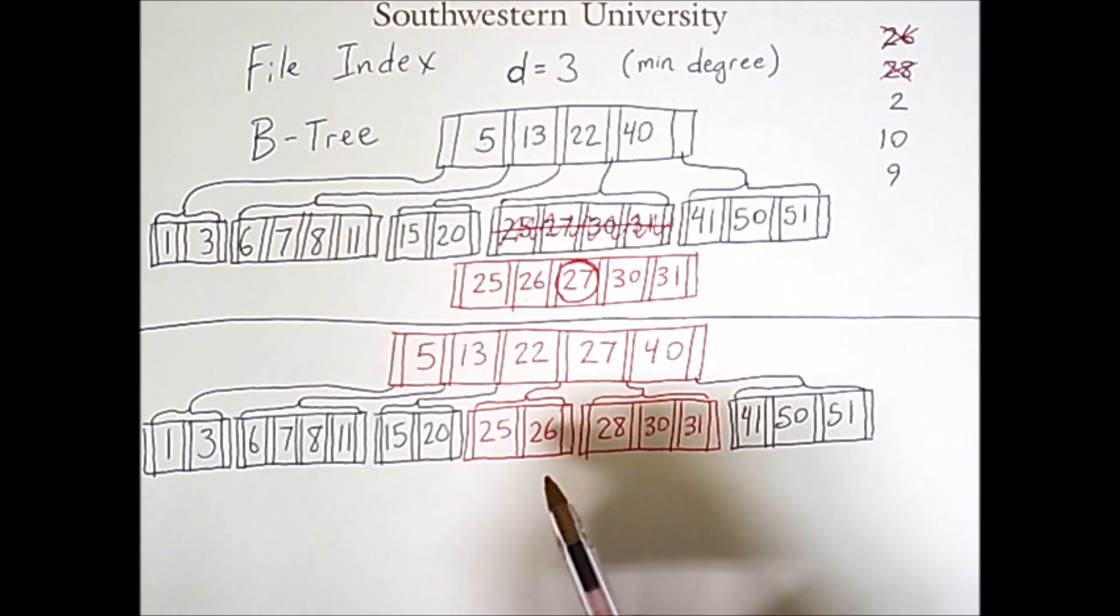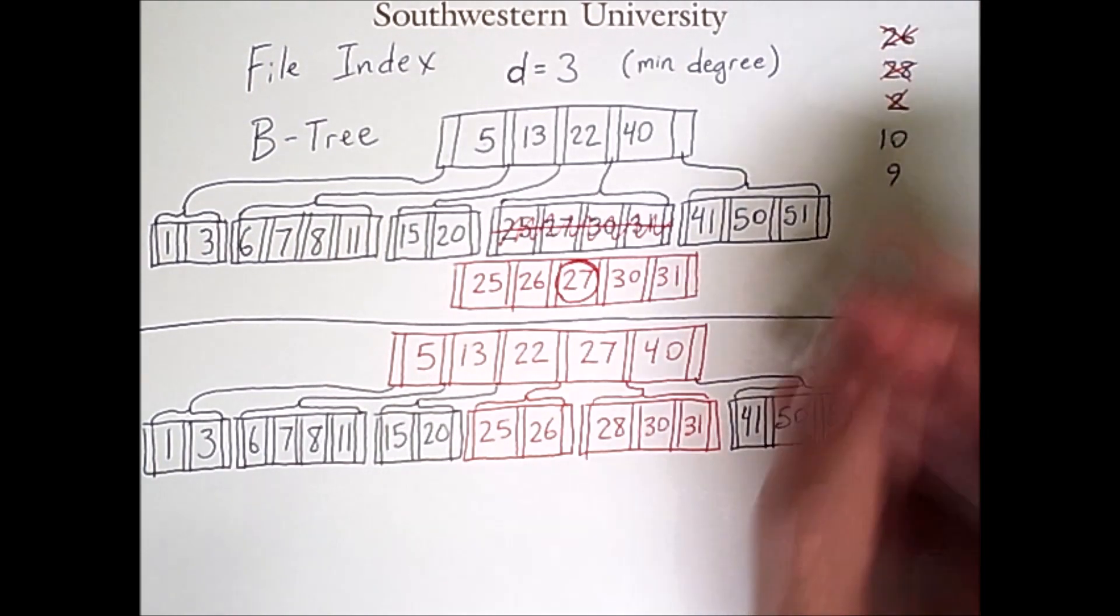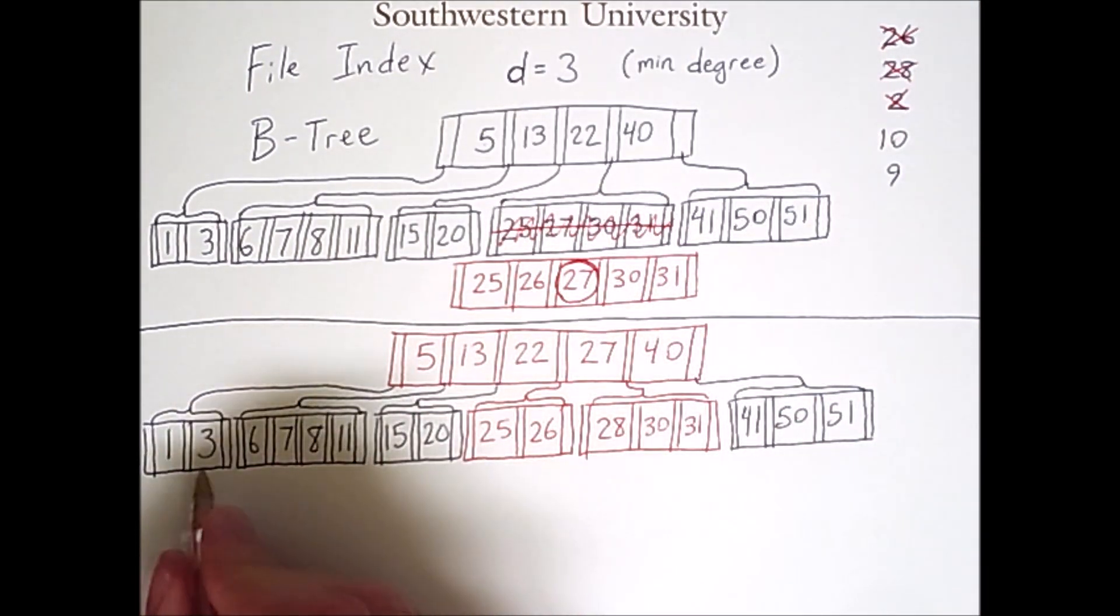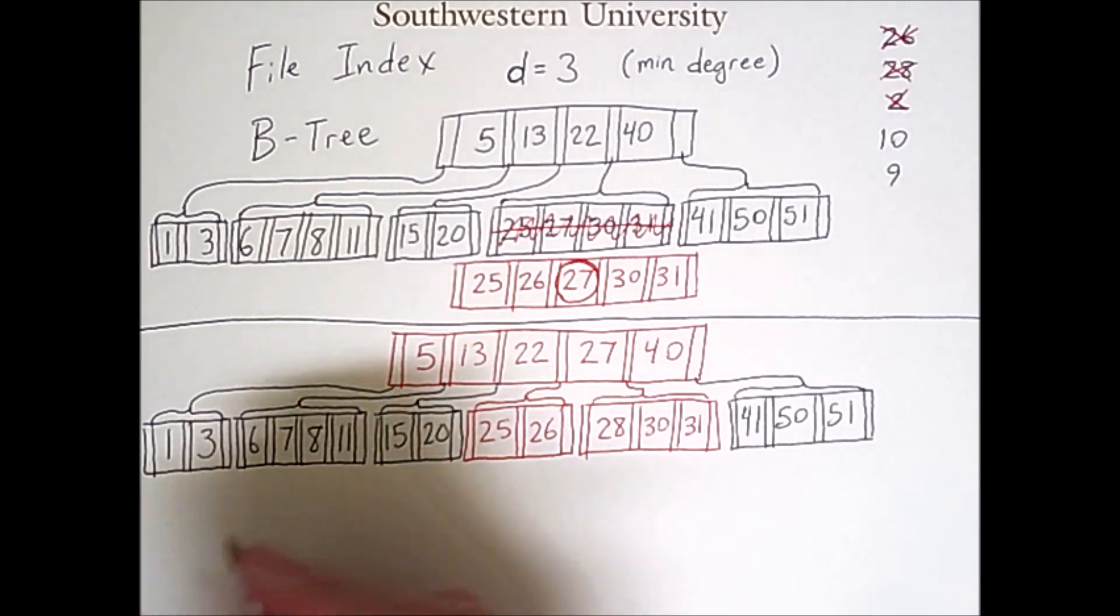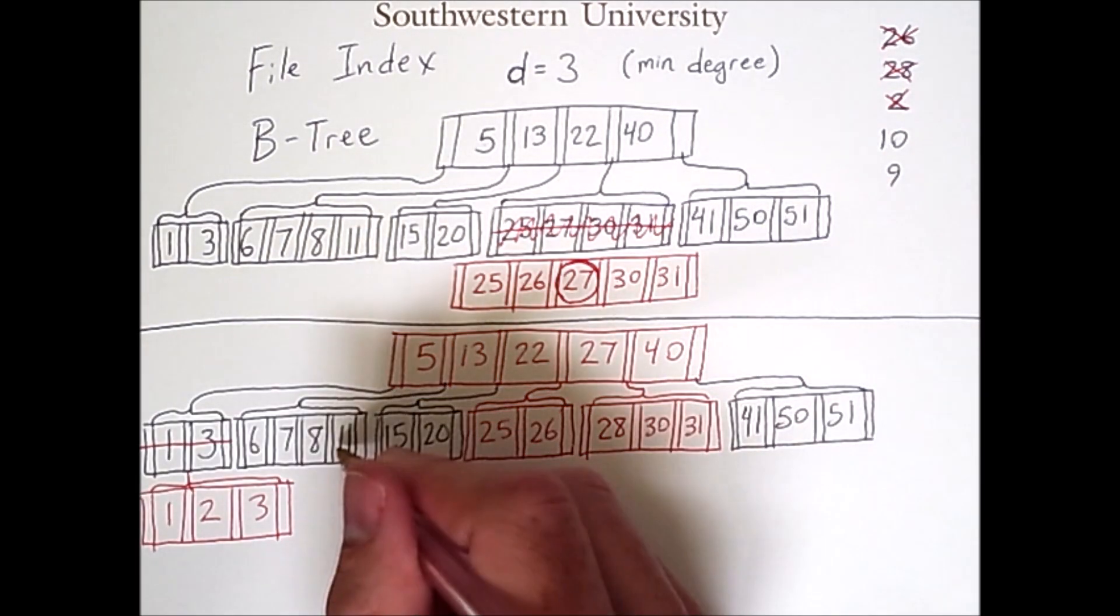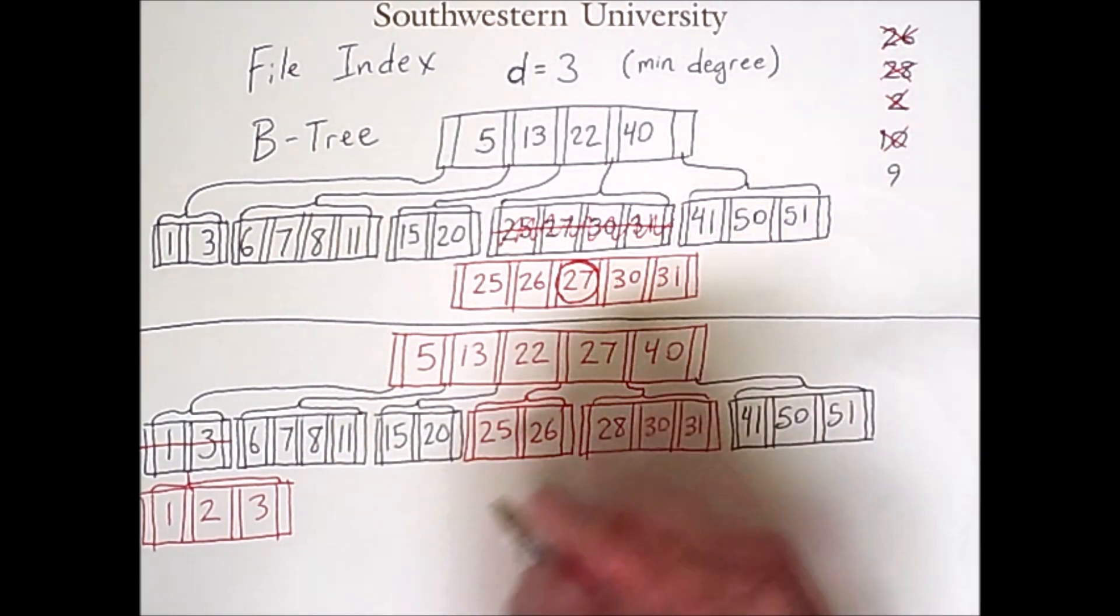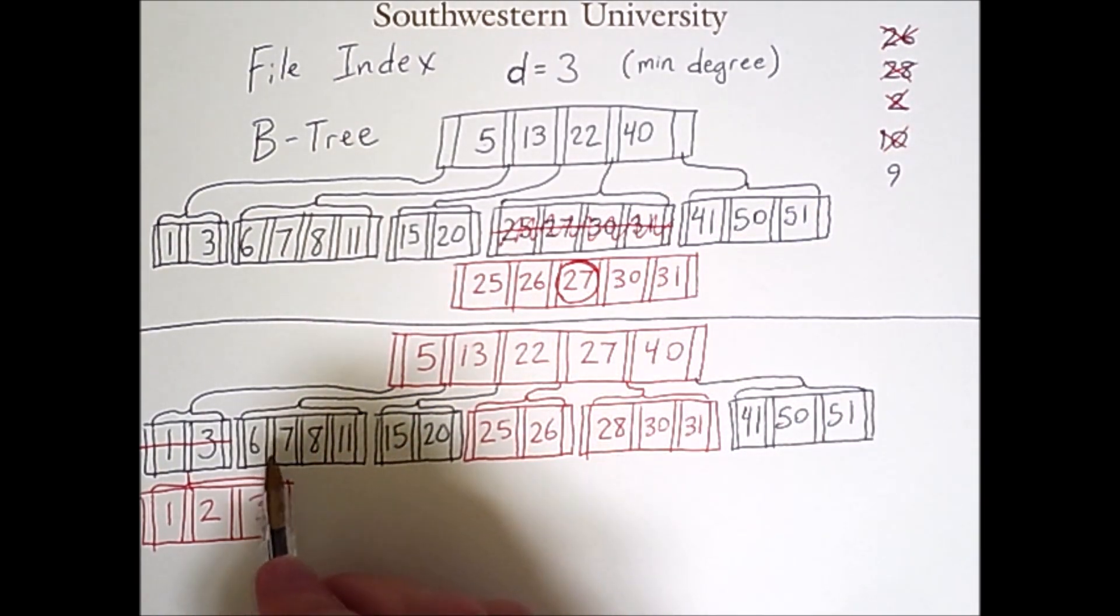So the next two operations will be simple additions, but you'll see how the last one is going to cause quite a large change to the tree. So first we insert this 2, which simply goes between this 1 and 3, thus resulting in a fairly small change here. The next insertion is a 10, which will simply go between this 8 and 11, which is also a fairly simple change because that only takes us from 4 keys up to 5, which is still within limits.